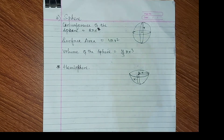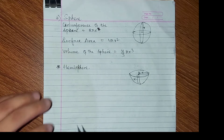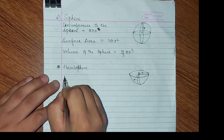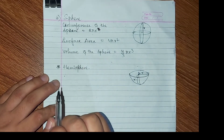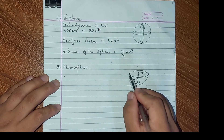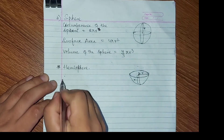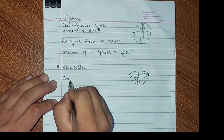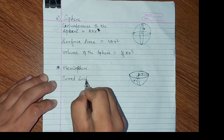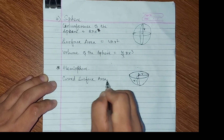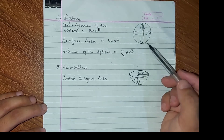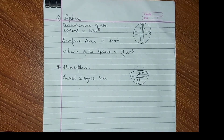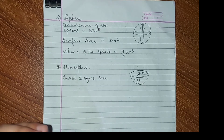Now hemisphere — take any sphere and cut it into half portions. For a hemisphere, the circumference is the same: 2πr. The curved surface area of a hemisphere — the sphere is covered on the curved part.